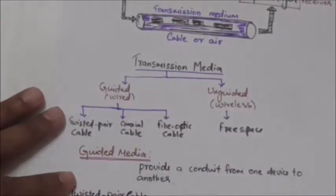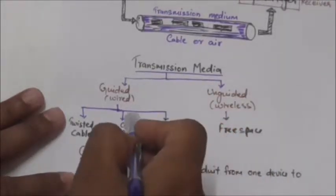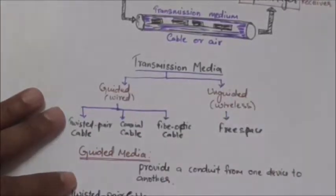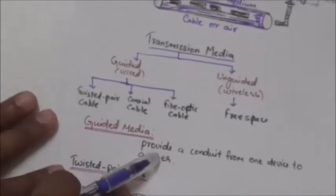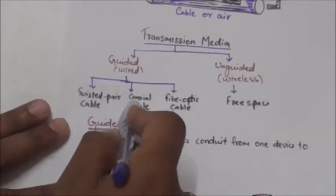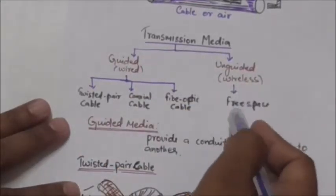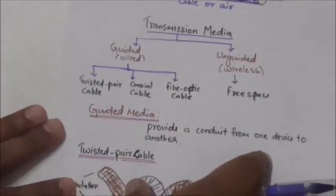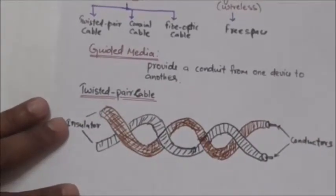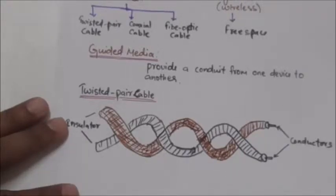In telecommunications, the transmission media can be divided into two broad categories: guided and unguided. Guided media include twisted pair cable, coaxial cable, and fiber optic cable. Unguided media is free space. In this tutorial we will study only about guided media, and in the next tutorial we will study about unguided media.